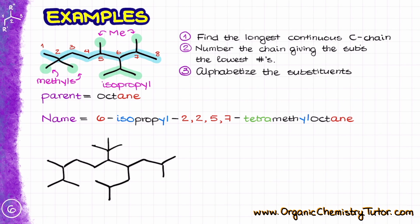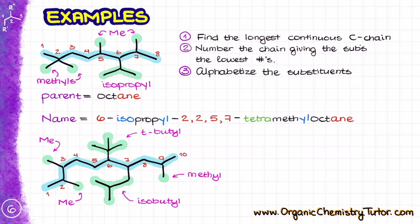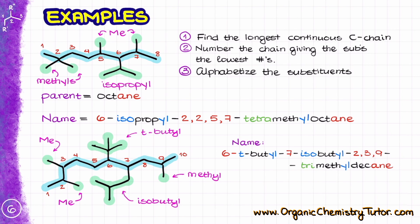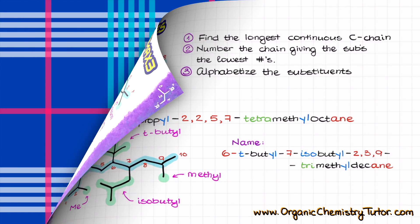For another example, we have the longest carbon chain being 10 carbons, and we also have two different 4-carbon substituents: a tert-butyl and an isobutyl. We also have a few methyl groups, which after proper alphabetization gives us 6-tert-butyl-7-isobutyl-2,3,9-trimethyldecane.